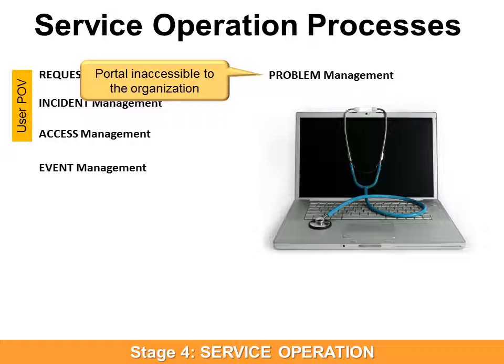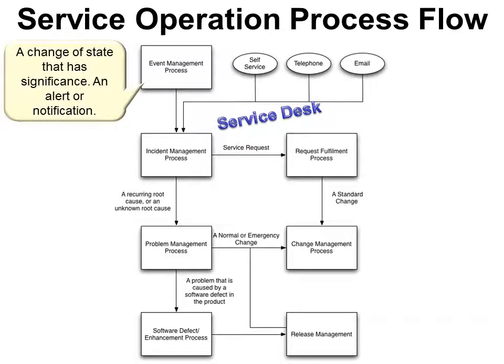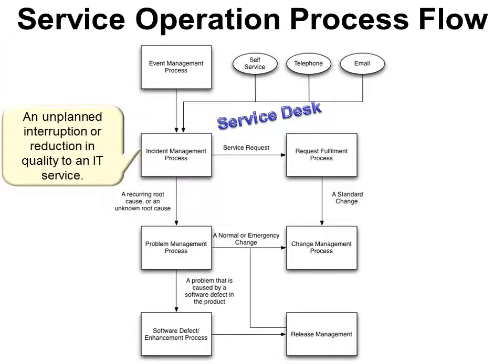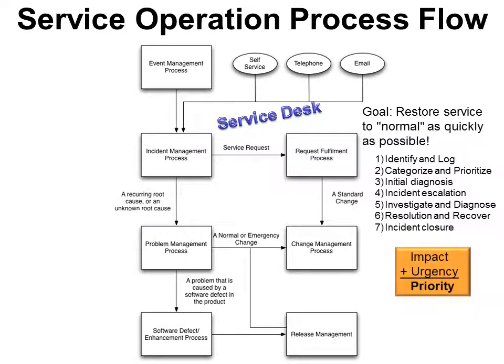For example, the portal is inaccessible to the organization — this is a cause of one or more incidents. A service operation process flow might look something like this. The service desk handles event management. An event is a change of state that has significance — an alert or notification. An incident is an unplanned interruption or reduction to the quality of an IT service. So an event means something has happened; an incident means something isn't working right. The goal of the service desk is to restore service to normal as quickly as possible, and to do that there's a seven-step process.